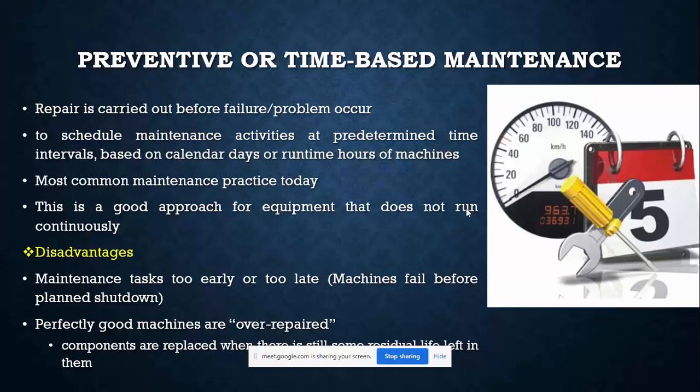Perfectly good machines are sometimes over-repaired. Because a scheduled maintenance period arrives — say once every three or six years — work is done regardless of the actual condition. People don't assess whether the machine or its parts still have remaining useful life; they simply follow the time interval and carry out routine maintenance work.